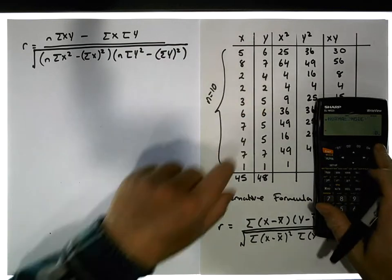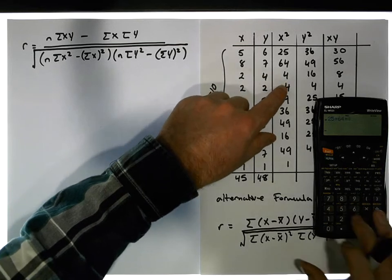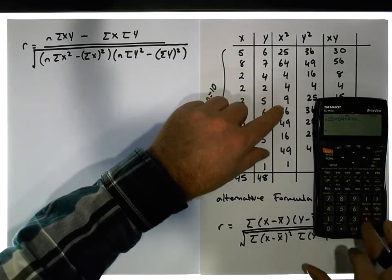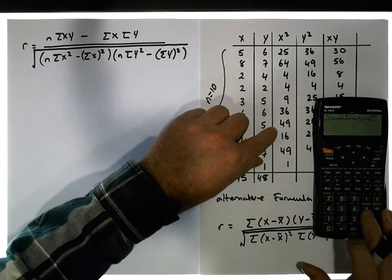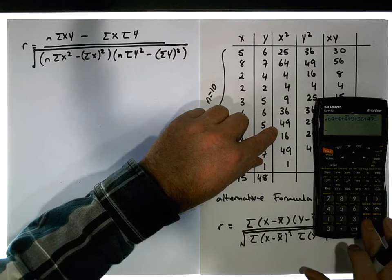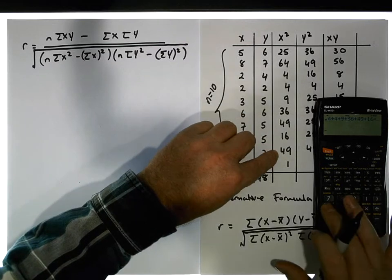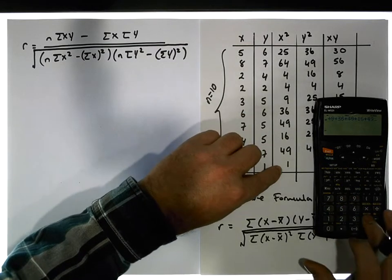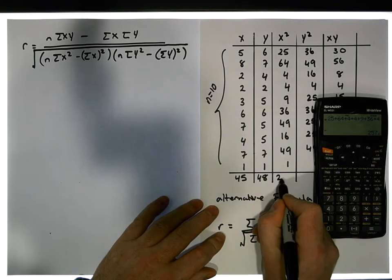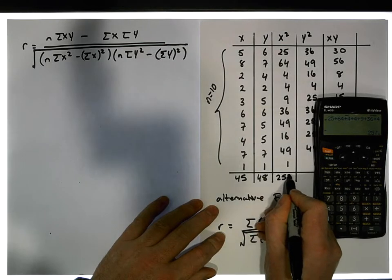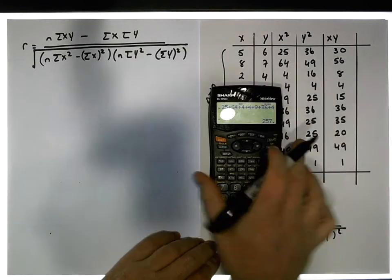For the x squared column, we have 25 plus 64 plus 4 plus 4 plus 9 plus 36 plus 49 plus 16 plus 49 plus 1, which gives us a value of 257. So we have 257 for the sum of x squared.